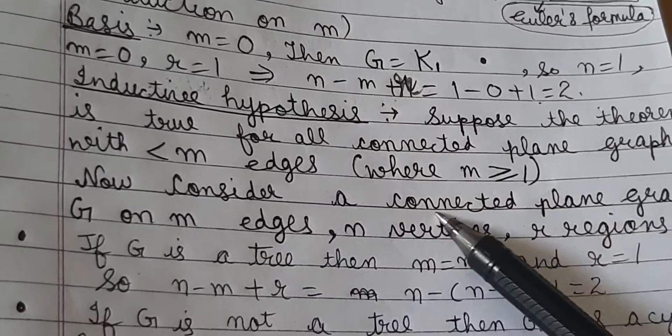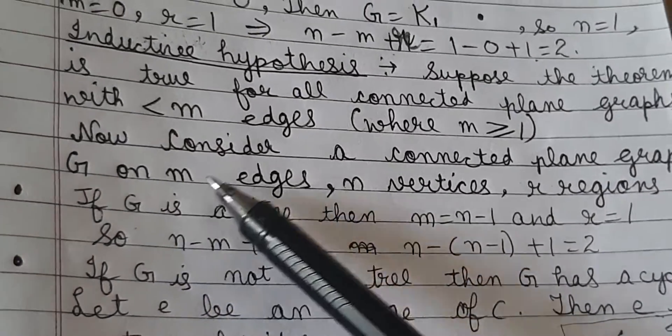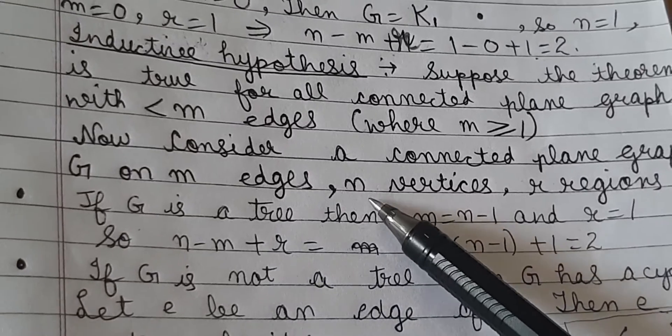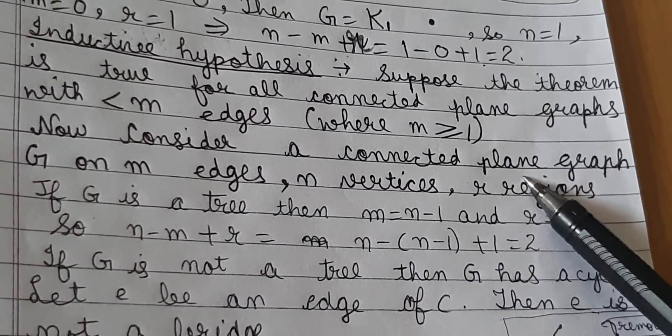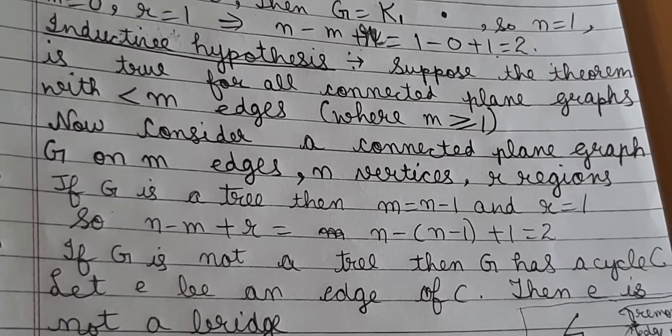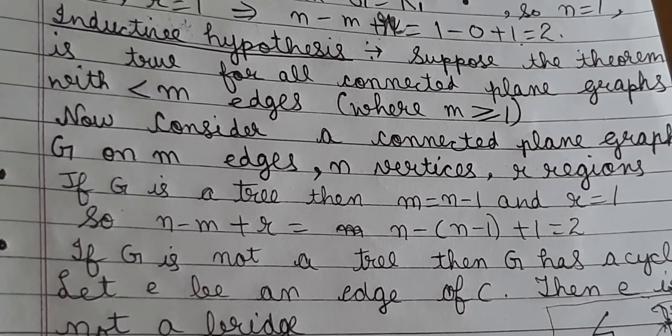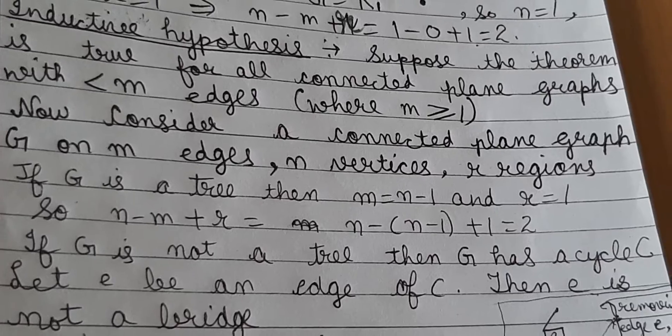Now consider a connected plane graph G on m edges, n vertices and r regions. Our proof now divides into 2 cases, depending on whether or not our graph G is a tree.